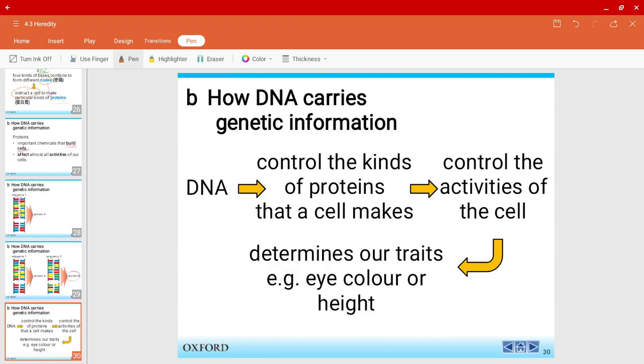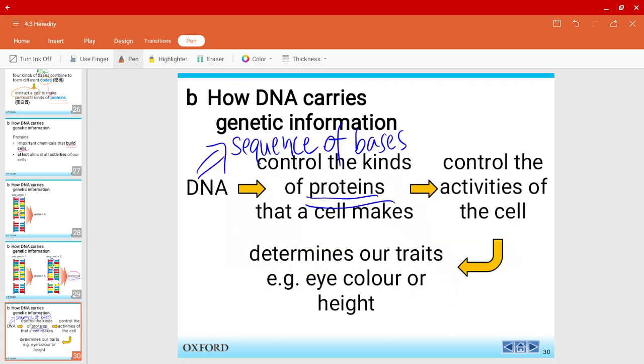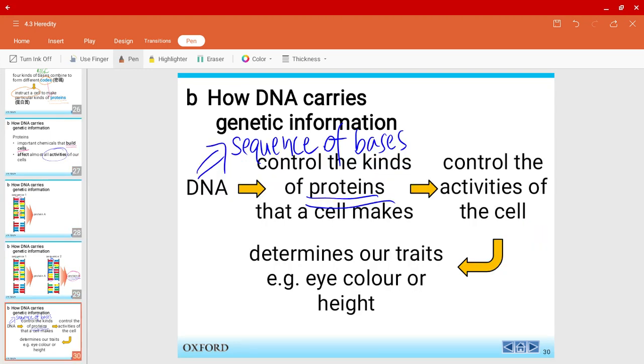So, DNA, as I told you, because it has the sequence of bases, because the sequence of bases inside the DNA, they can control the kind of protein that a cell can make. As I've just showed you, because of the difference in the bases, a different protein is formed. Now, because a different protein is formed, and then recall, you must recall that because proteins, they can affect almost all the activities of our cell. So, proteins, they can control the activities of our cell.